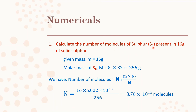Let's solve a problem: calculate the number of molecules of sulfur S₈ present in 16 grams of solid sulfur. Number of molecules (N) = (given mass m × Avogadro's number N₀) ÷ molar mass M. Here m = 16 g, N₀ = 6.022 × 10²³, and molar mass M = 8 × 32 = 256 g/mol (atomic mass of sulfur is 32, with 8 atoms). Substituting these values gives 3.76 × 10²² molecules.